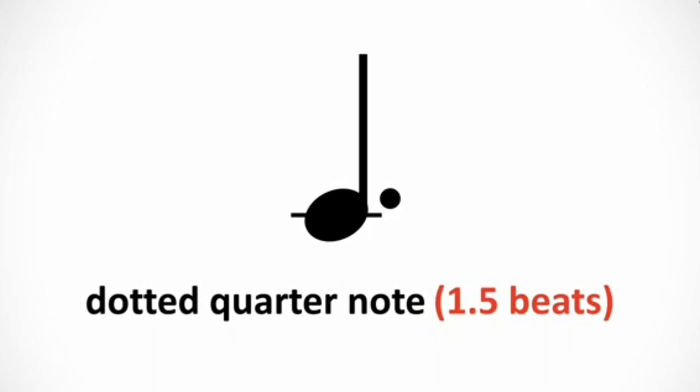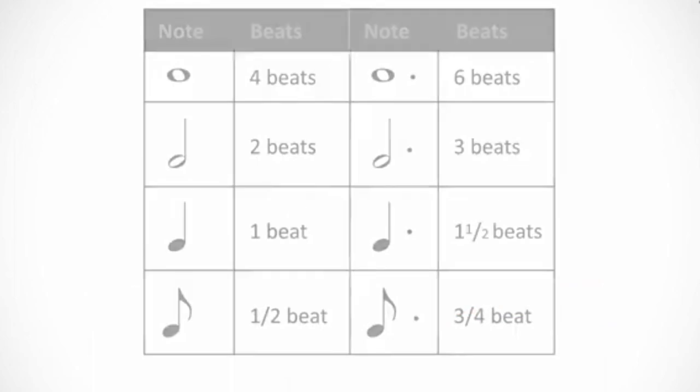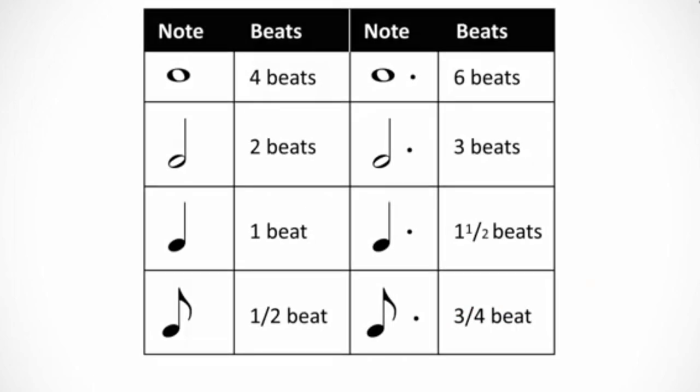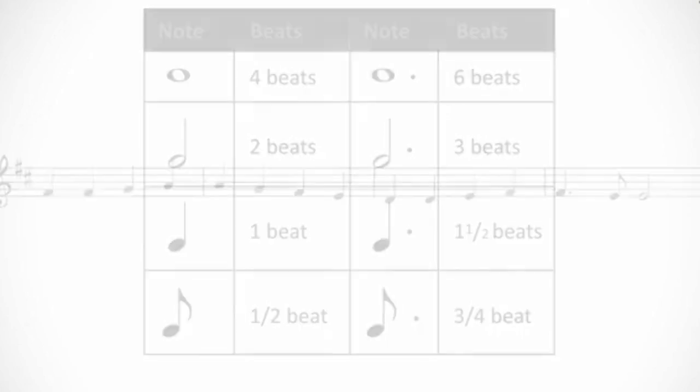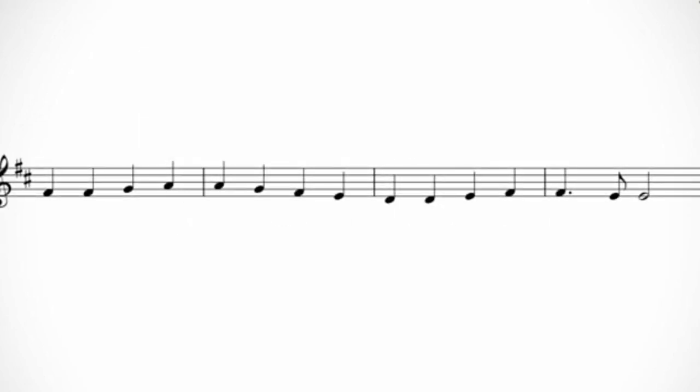You can add dots to any note value you want to get 1.5 times the normal value of that note. Here is a chart of how the dots change the values of frequently used notes. And here's how this augmentation dot notation looks in context. This is from Beethoven's famous Ode to Joy.